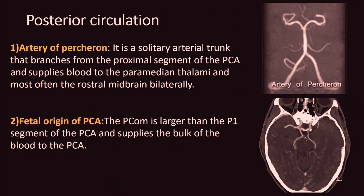Posterior circulation variants include the artery of Percheron, a solitary arterial trunk branching from the proximal segment of the PCA that supplies the paramedian thalami and rostral midbrain bilaterally. Fetal origin of the PCA is termed when the PCOM is larger than the P1 segment and supplies the bulk of blood to the PCA. An MR image shows bilateral fetal PCOM.